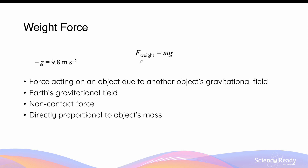In the weight force equation, it is important to notice that the weight force is directly proportional to an object's mass. Heavier objects are acted upon by stronger weight forces when they are inside the same gravitational field. If we compare the weight forces of two objects — say, 5 kilograms versus 10 kilograms — the 5 kilogram mass will have a smaller weight force, exactly half as much compared to that acting on the 10 kilogram mass.